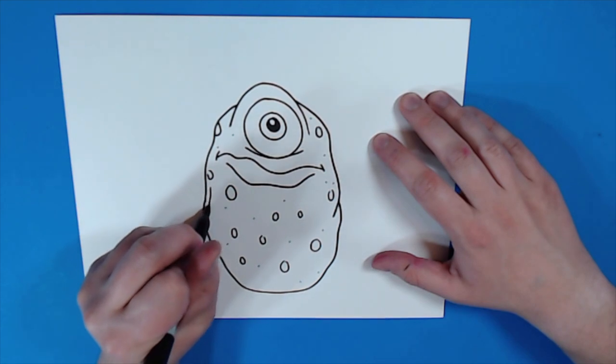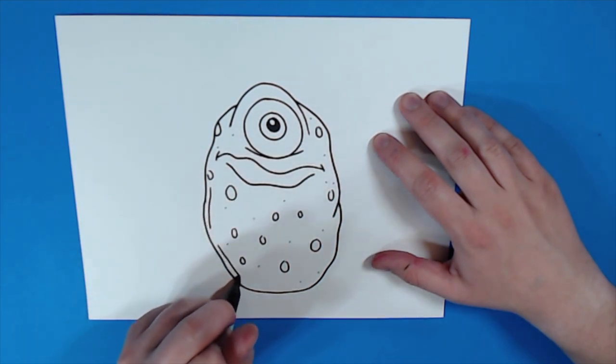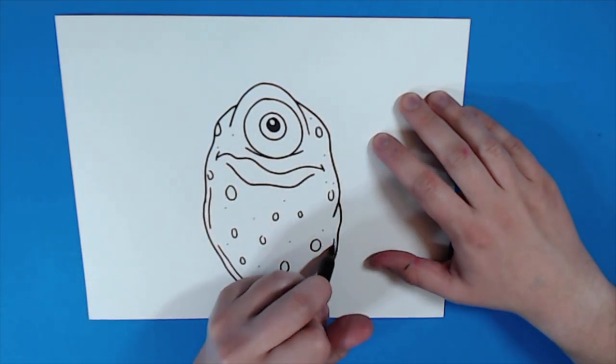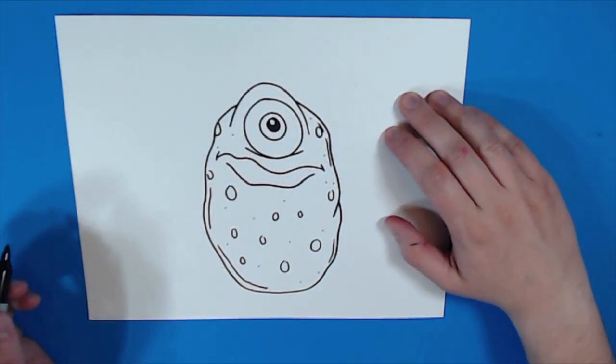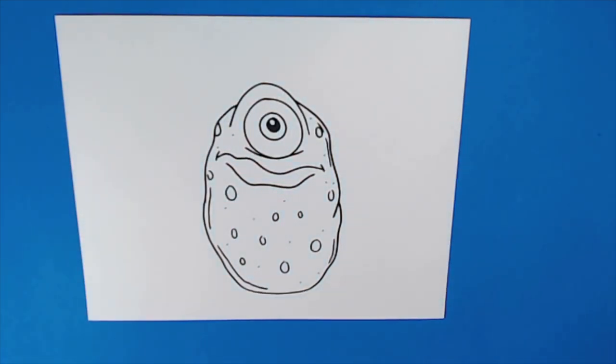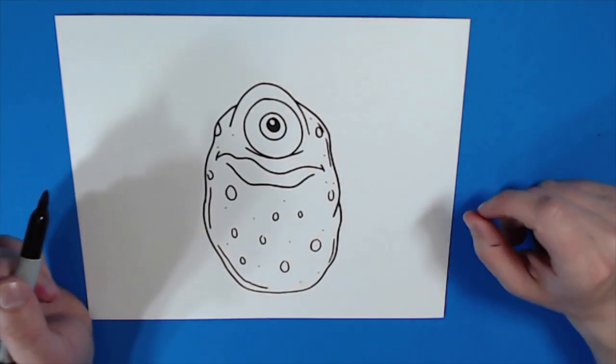Now, my last step is I'm going to add some of these extra lines right around the side of my potato. That just kind of gives it a little bit more of a realistic look. So, there you go. There is your Cyclops potato.